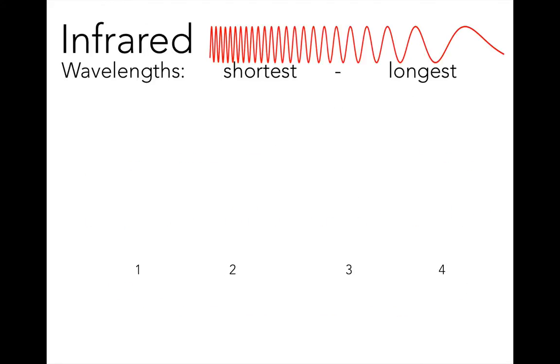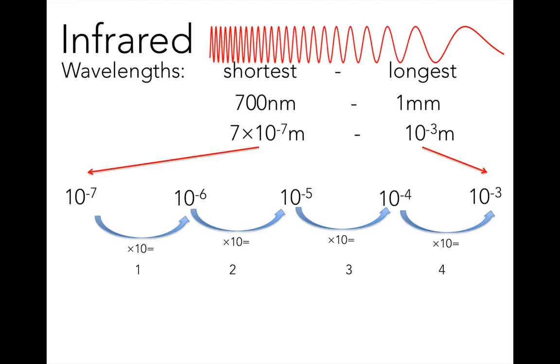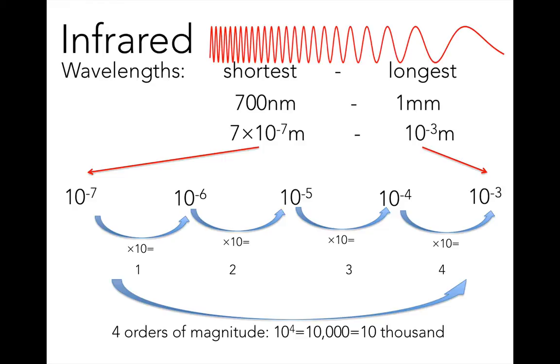Infrared light lies between radio light and visible light in the electromagnetic spectrum. Its wavelengths range from 700 nanometers, 700 billionths of a meter, at the shortest, to 1 millimeter at the longest, where radio wavelengths take over. This is about 4 orders of magnitude, or 10,000. The shortest infrared wavelengths are 10,000 times shorter than the longest.